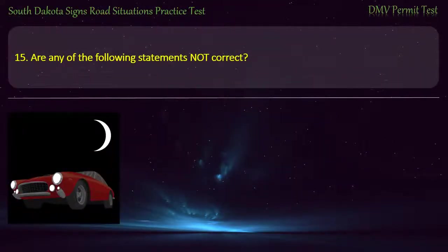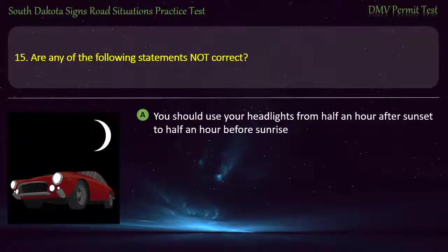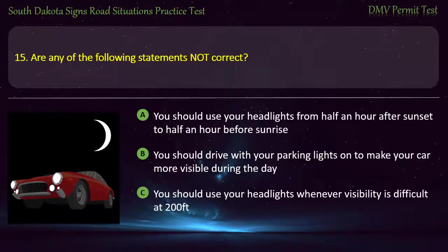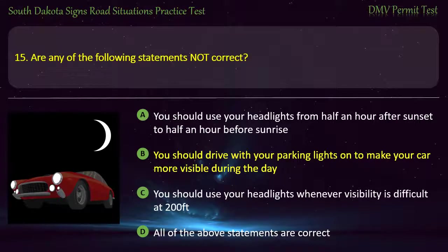Question 15: Are any of the following statements not correct? Options: You should use your headlights from half an hour after sunset to half an hour before sunrise; You should drive with your parking lights on to make your car more visible during the day; You should use your headlights whenever visibility is difficult at 200 feet; All of the above statements are correct. Answer: You should drive with your parking lights on to make your car more visible during the day.